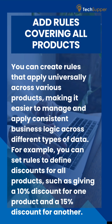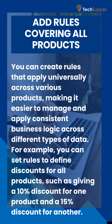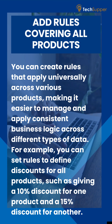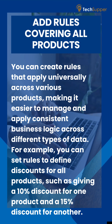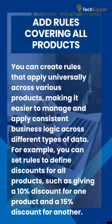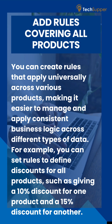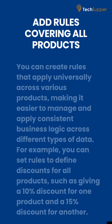Add rules covering all products. You can create rules that apply universally across various products, making it easier to manage and apply consistent business logic across different types of data. For example, you can set rules to define discounts for all products, such as giving a 10% discount for one product and a 15% discount for another.